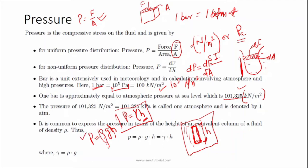Here rho is the density of the fluid, g is the acceleration due to gravity, and h is the height. For example, suppose this is a channel section with a depth h; then the pressure at the bottom will be equal to the specific weight of that fluid times h — so gamma of water times h.